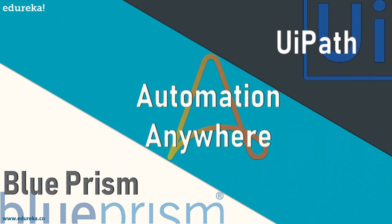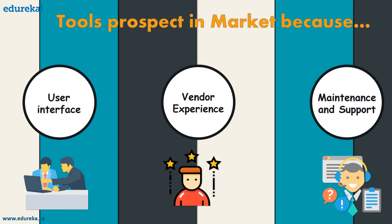The top RPA tools in the market today are UI Path, Blue Prism, and Automation Anywhere. All three have various functionalities and specific features which make them grow in the market. Apart from these, hundreds of tools exist, but if you're looking to become an RPA developer, UI Path, Blue Prism, and Automation Anywhere are the top three. These tools prosper because of user interface, vendor experience, maintenance, and support.